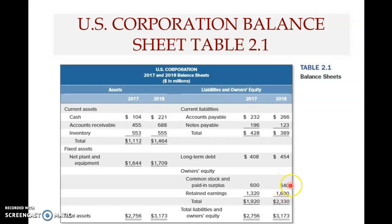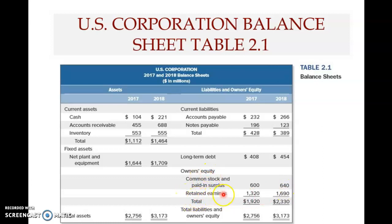...640 million dollars was the amount issued in terms of shares by the company to the shareholders at various points in time. This was the value outstanding at the end of year 2018. So this means 640 million dollars worth of shares were issued to the owners or shareholders. Then we have another major item under owners equity, which is retained earnings.